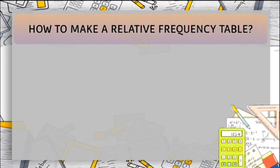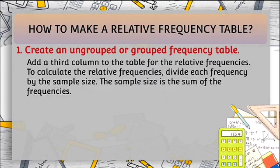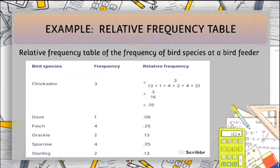Next is how to make a relative frequency table. You just need to create an ungrouped or grouped frequency table, then add a third column for the relative frequencies. To calculate the relative frequencies, divide each frequency by the sample size. The sample size is the sum of the frequencies. Here we can see an example of a relative frequency table. This table is the same as the ungrouped frequency table, but we just need to calculate the relative frequency by dividing each frequency by the sample size. Our sample size here is 16: 3 plus 1 plus 4 plus 2 plus 4 plus 2 equals 16.